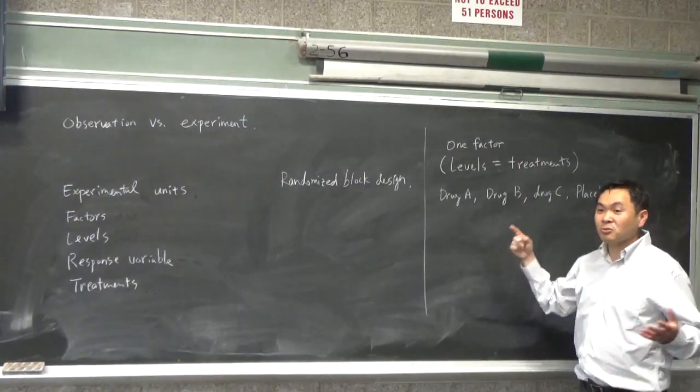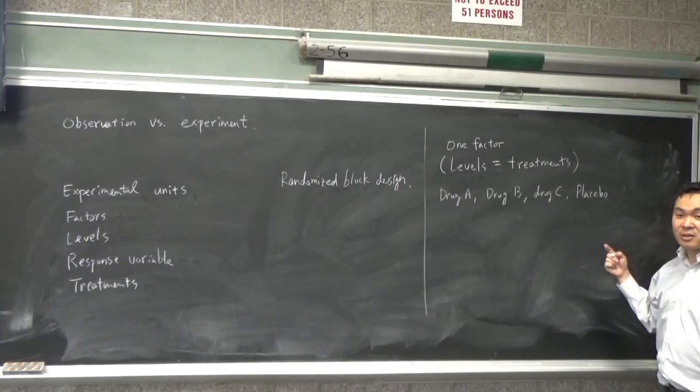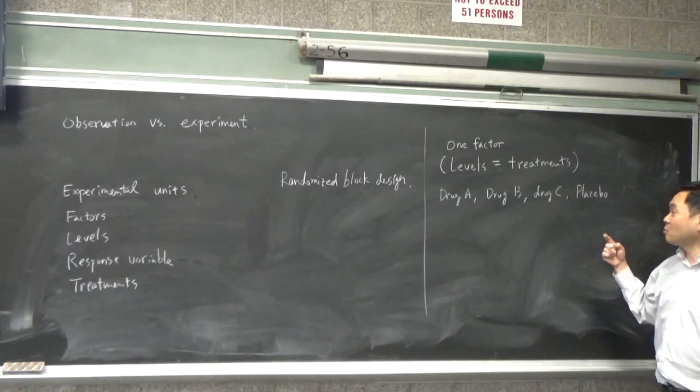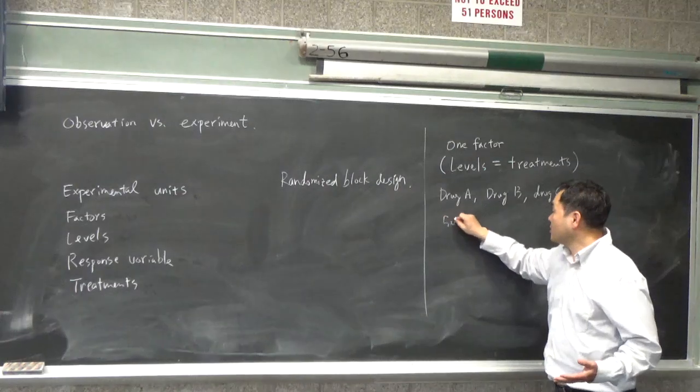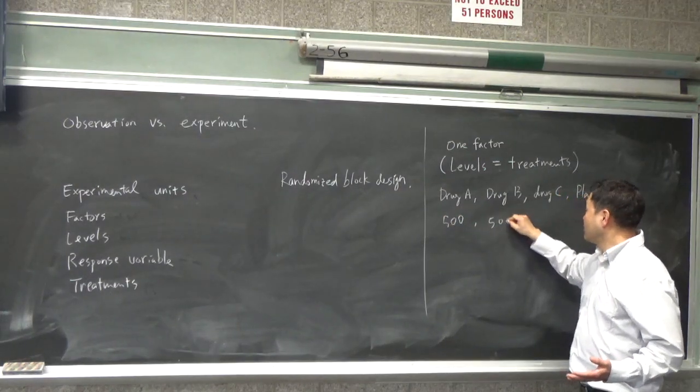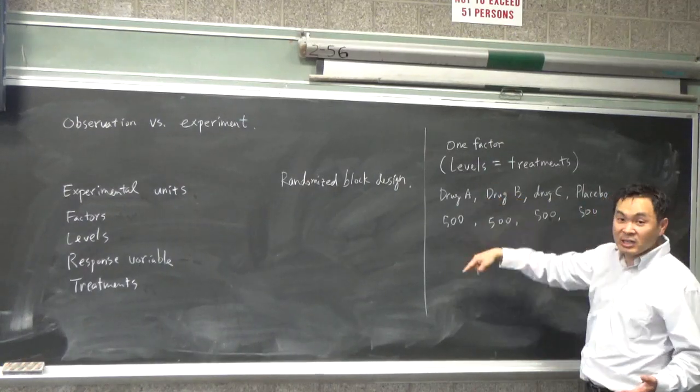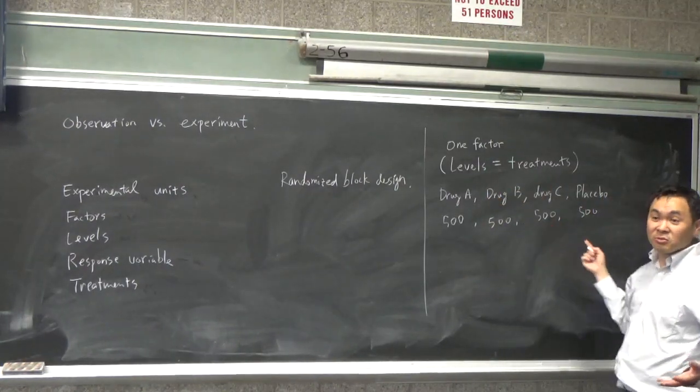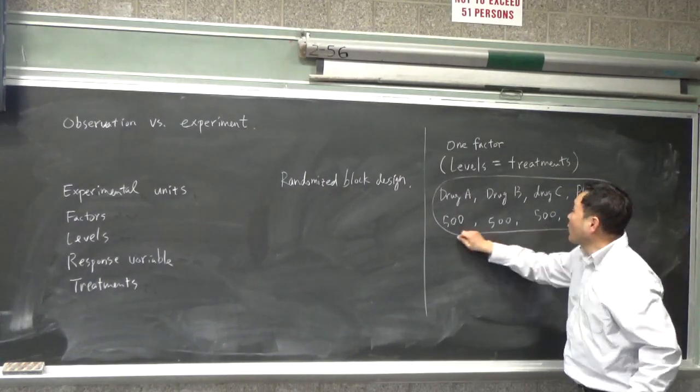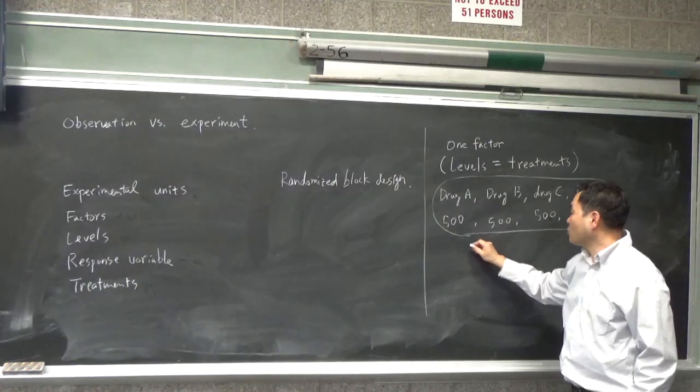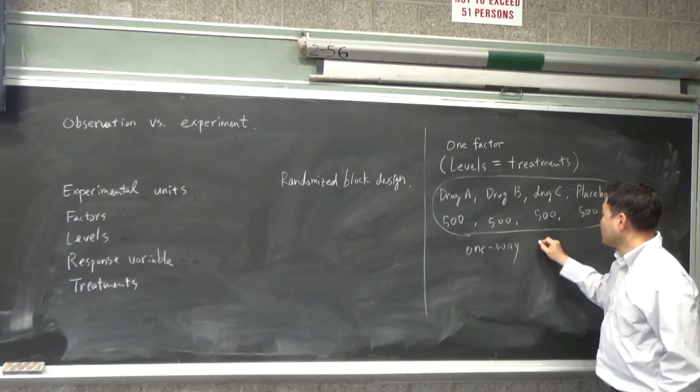And you wanted to enlist 2,000 people for this trial, then what's the most ideal way to divide people? 500. 500 each, right? So if you divide the entire population into equal amounts for each levels of this one-factor research, such a way of doing the experiment is called a one-way design, okay?